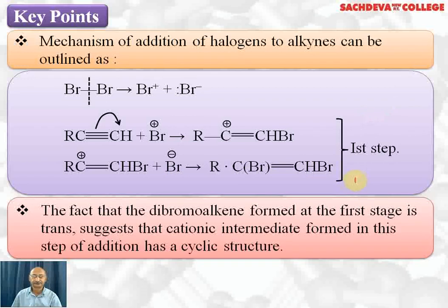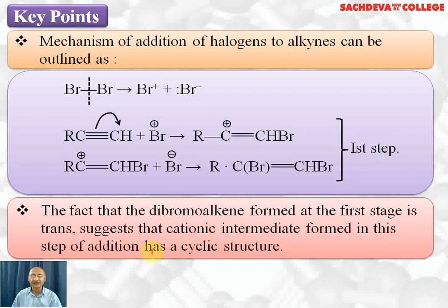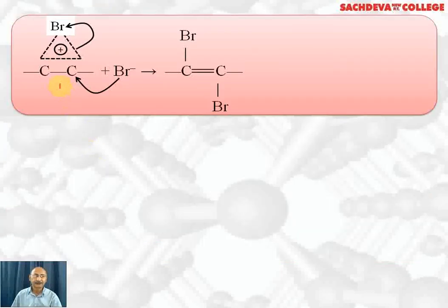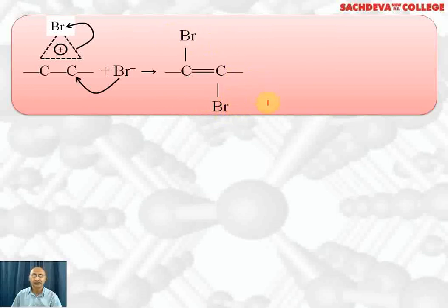This is the first step of the addition. The dibromo alkene formed at the first stage is trans, meaning the two Br atoms attack from opposite sides. This also indicates that the cationic intermediate formed in this step has a cyclic structure. Due to crowding on one side, Br⁻ attacks from the opposite side, resulting in the formation of trans-dibromo alkene, where the Br groups are on opposite sides.